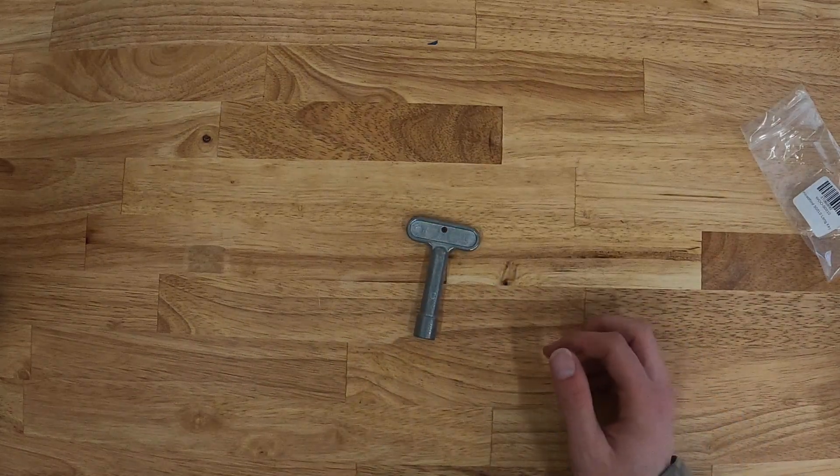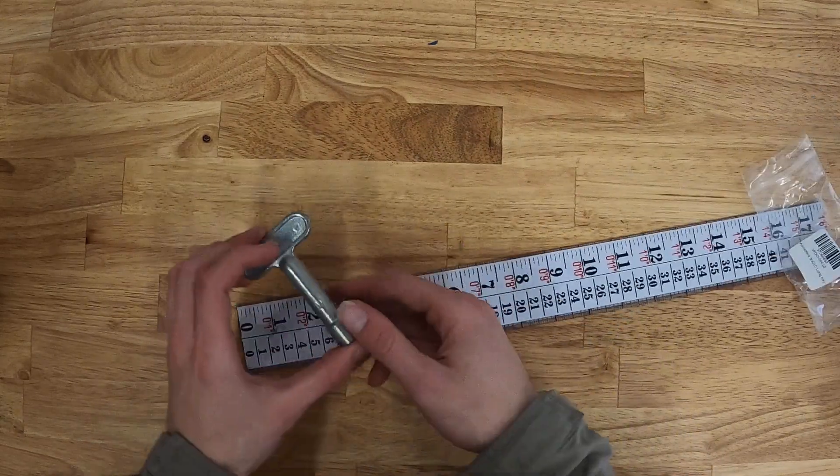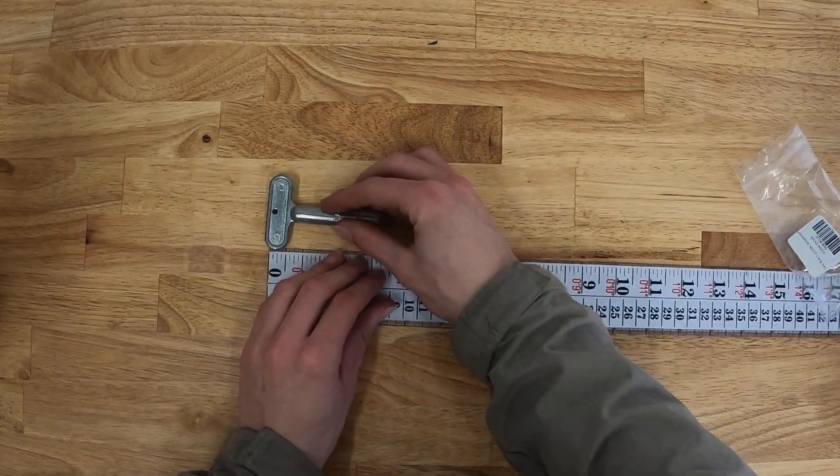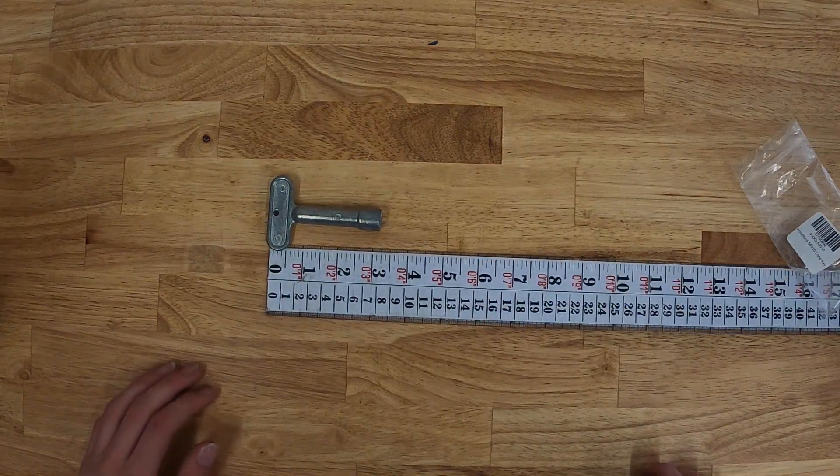We'll go ahead and get it out of the bag here and take a couple measurements of the key itself. We'll start with total height. The total length of the key is about three and a quarter inches.